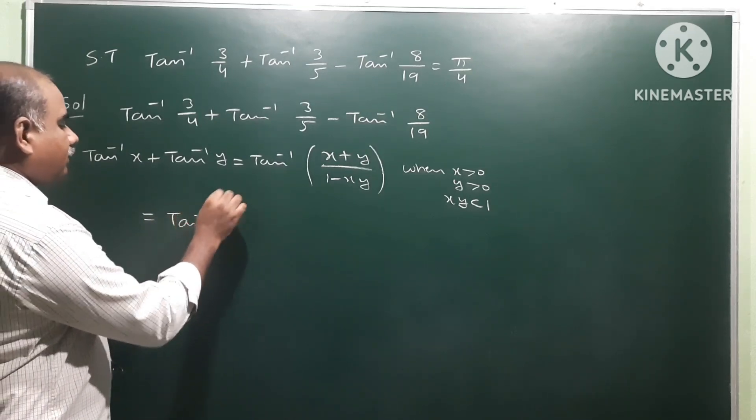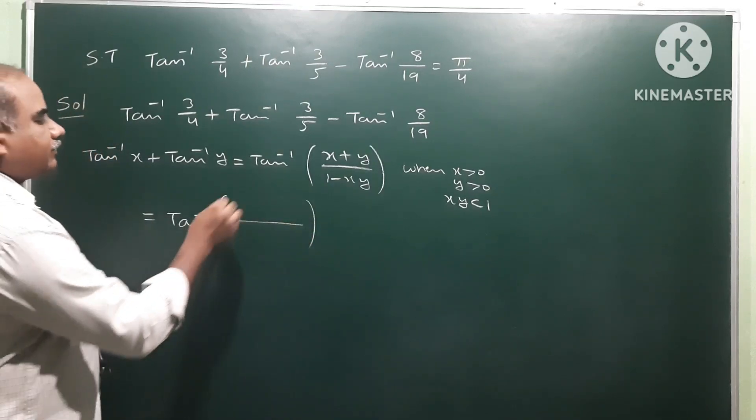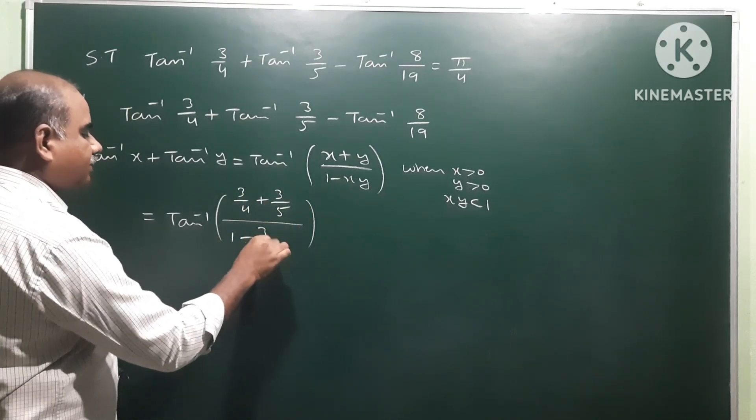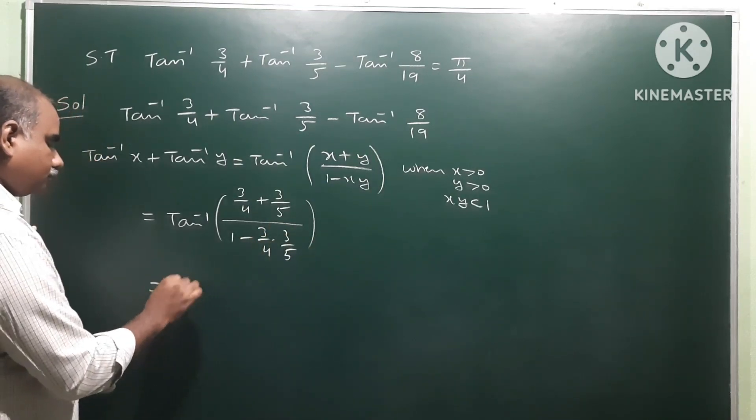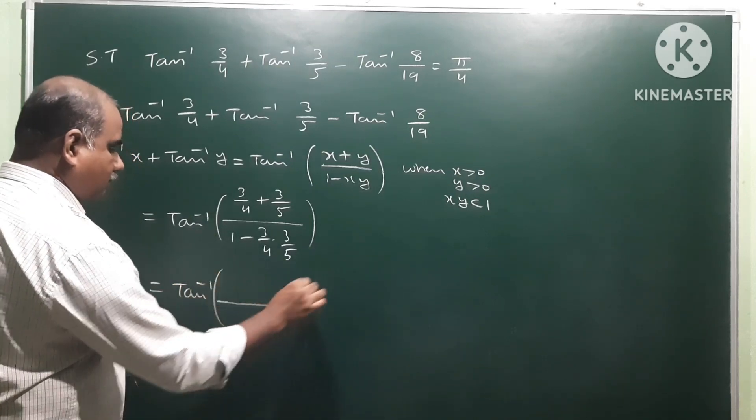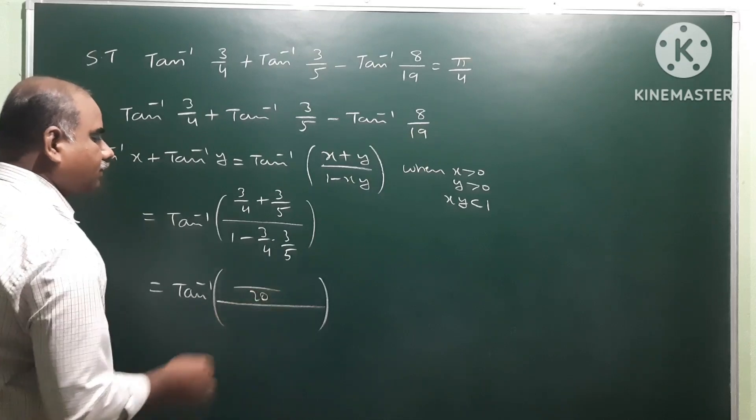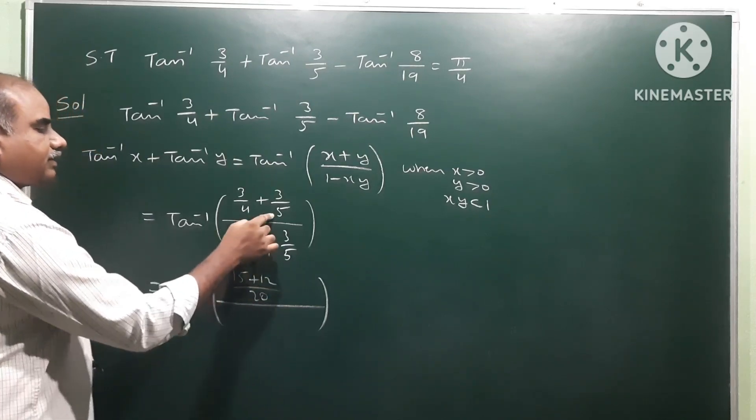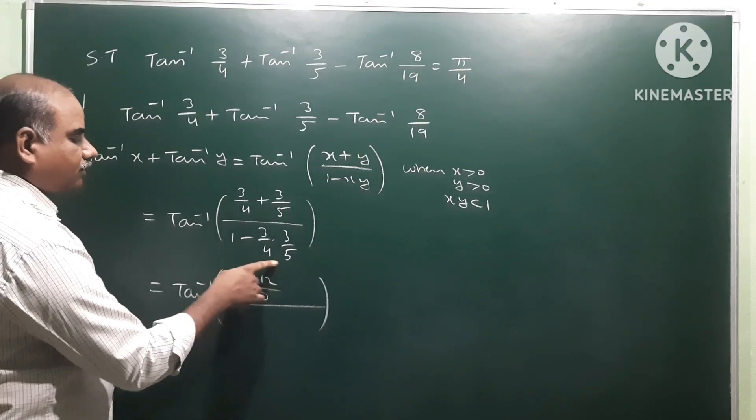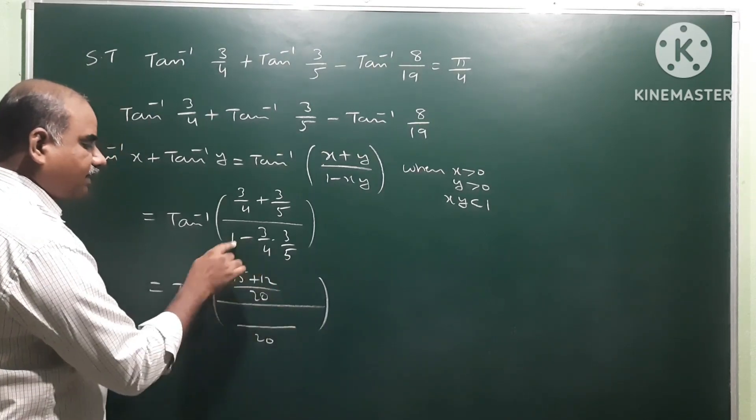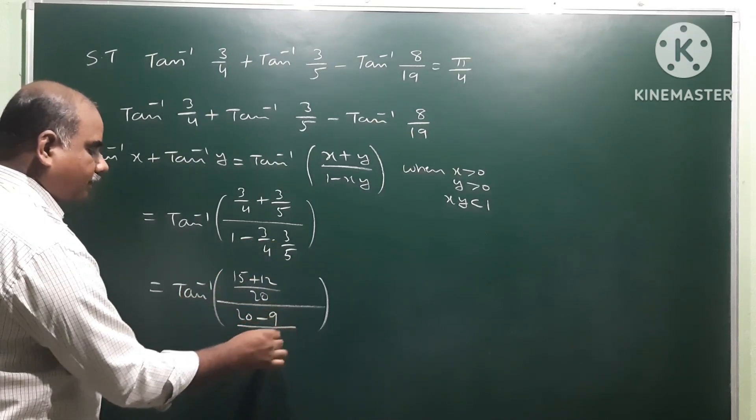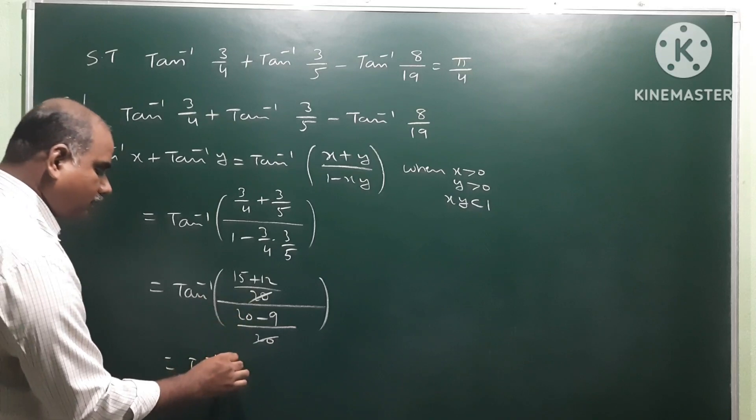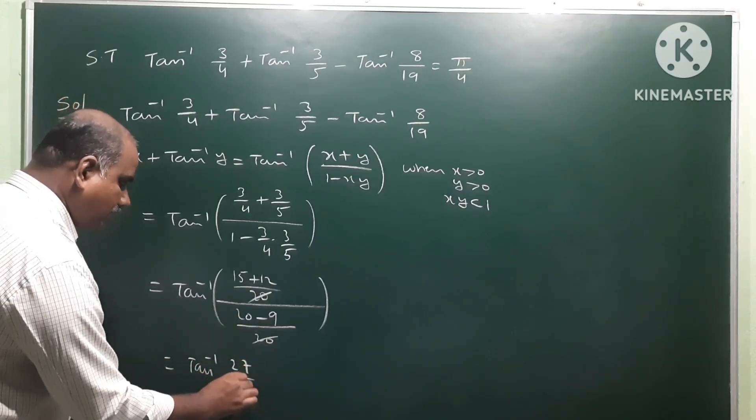Let us calculate first two terms: tan inverse x plus y, 3 by 4 plus 3 by 5, by 1 minus 3 by 4 times 3 by 5. Finally it is equal to tan inverse 15 plus 12, 27, by 20 minus 9, 11. So first two terms calculated.